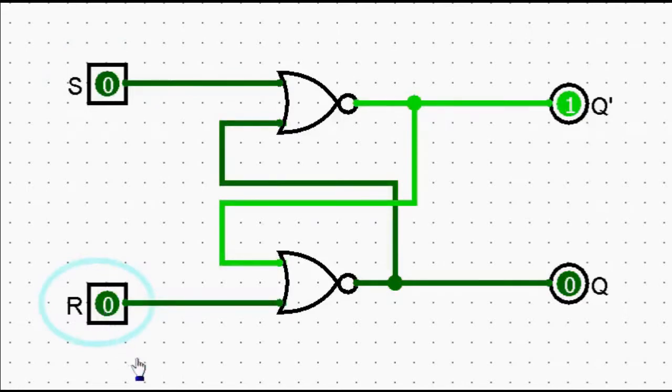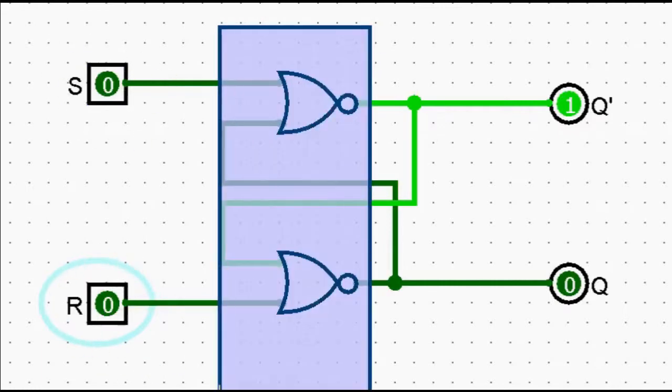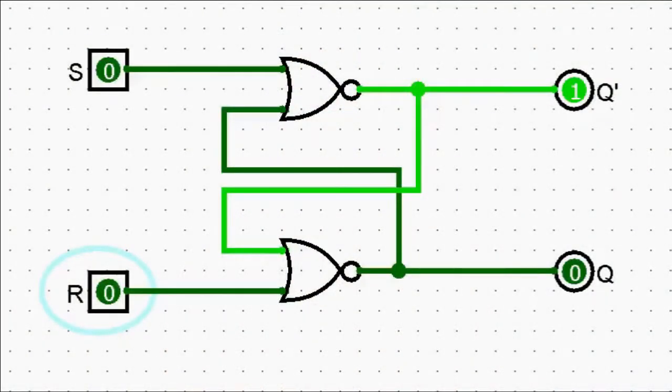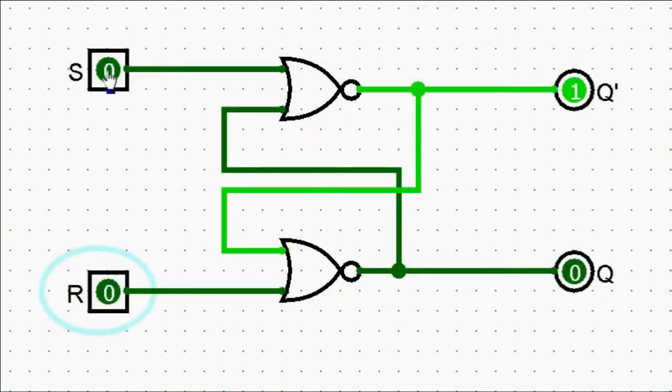An RS NOR latch refers to a set-reset latch implemented with NOR gates. The outputs are normally labeled as Q and Q-inverted, meaning these two outputs always have to be opposites. We take the Q output as the valid correct output, and the other one to be its inversion. Every time we issue a set bit to the circuit, we want to set the internal state of this component to true. Notice that the moment I do that, the output for Q becomes true. So the set and reset inputs mean setting or clearing the internal state of this latch.